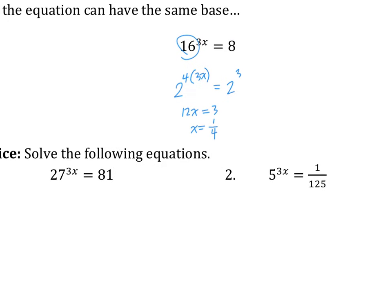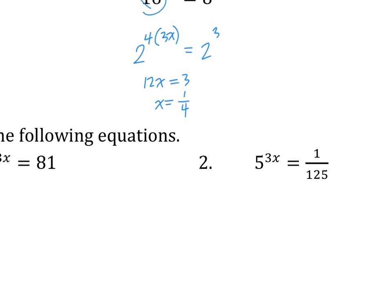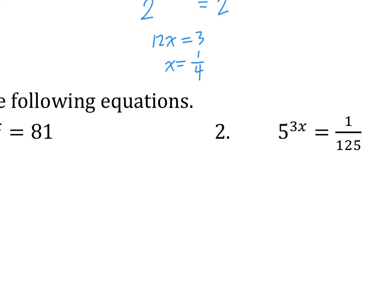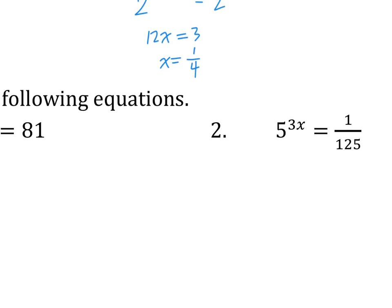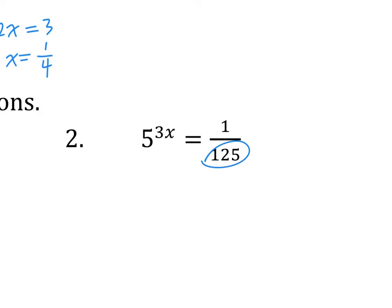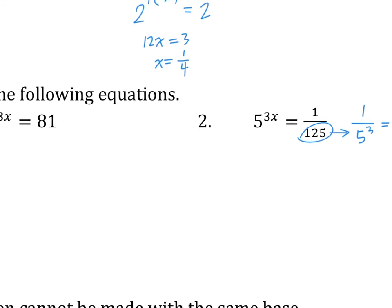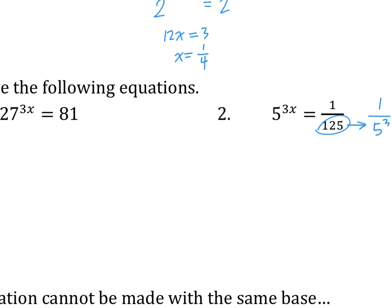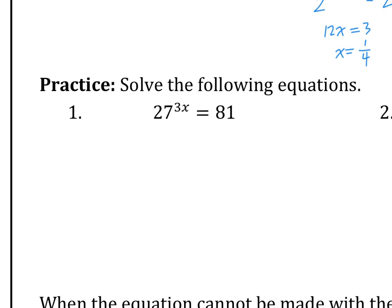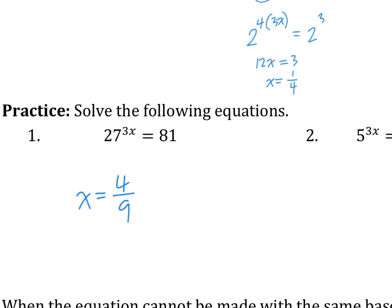For number two, we need to turn 1 over 125 into a base of 5 to solve. 125 is 5 to the third, and since it's in the denominator, it becomes 5 to the negative three — so now they have the same base and you can solve. Number one answer: x equals 4. Number two: solve similarly using the negative exponent.